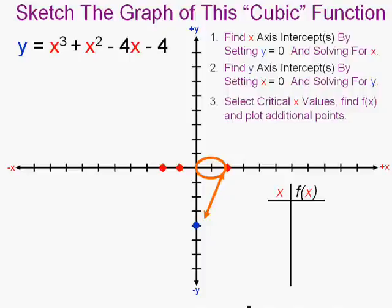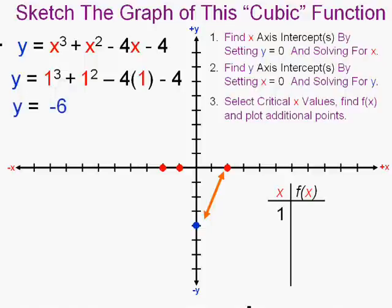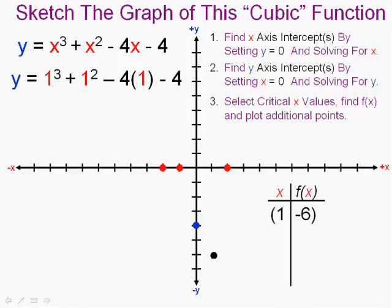If we put in one into this equation in every occasion of x, I get negative six. So I know the point one negative six is on there and let's plot it. Well that's, it has to go by that point to get back up to the other.